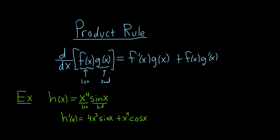Let's double check our work. It's the derivative of the first piece — the derivative of x⁴, using the power rule, we put the 4 in front to get 4x³ — times the second, plus the first times the derivative of the sine function, which is cosine. So everything looks okay.